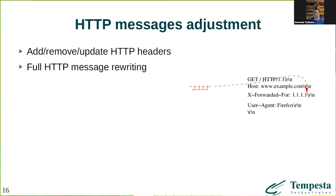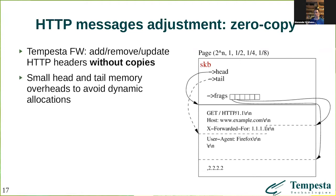In Tempesta FW, we work in kernel space and use kernel socket buffers with message fragmentation. This helps us avoid copies. For example, if we need to adjust an X-Forwarded-For header in an HTTP request, we just cut the HTTP message and rearrange frames to place the inserted data after the actual data. The network adapter then arranges the frames on its own. This way we avoid copies and can adjust messages in a more efficient way.